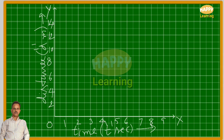Now let us note the points. First is (0, 0), and the second point is for 1 second, distance covered is 1 meter, so (1, 1) is the point. At time t equal to 2 seconds, distance covered is 3 meters, so (2, 3) is this point. Then at time t equal to 3, distance is 6, so (3, 6) is this point. Then (4, 7) is this point. Then (5, 12) is the point. Then (6, 14) is this point. So all the points are noted. Now let us join with a straight line between every 2 points.